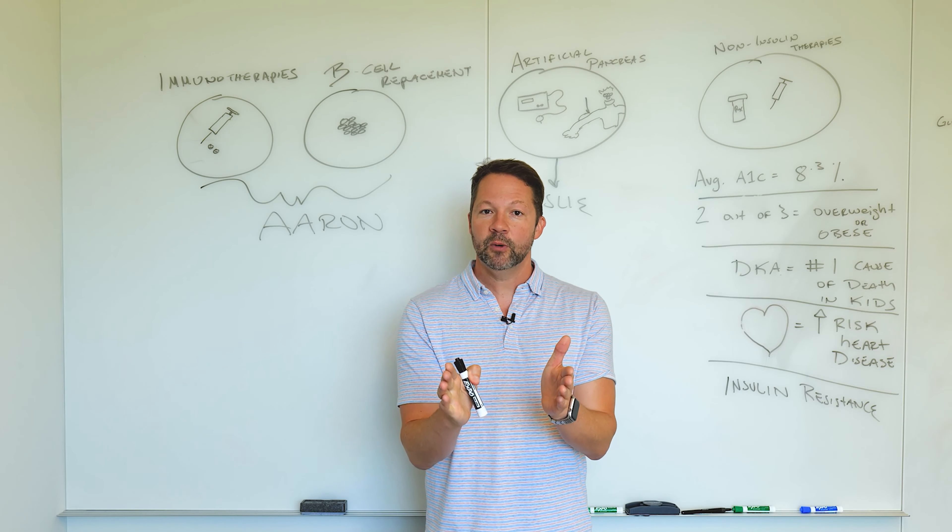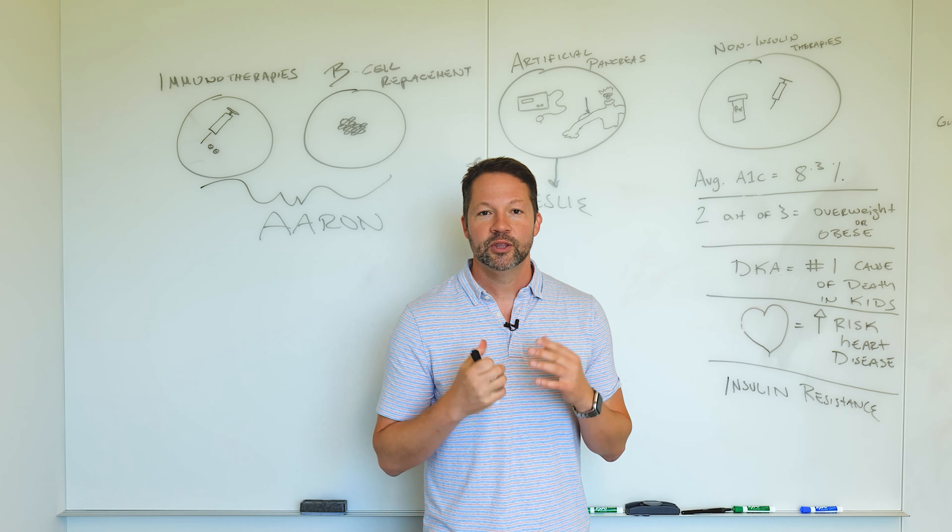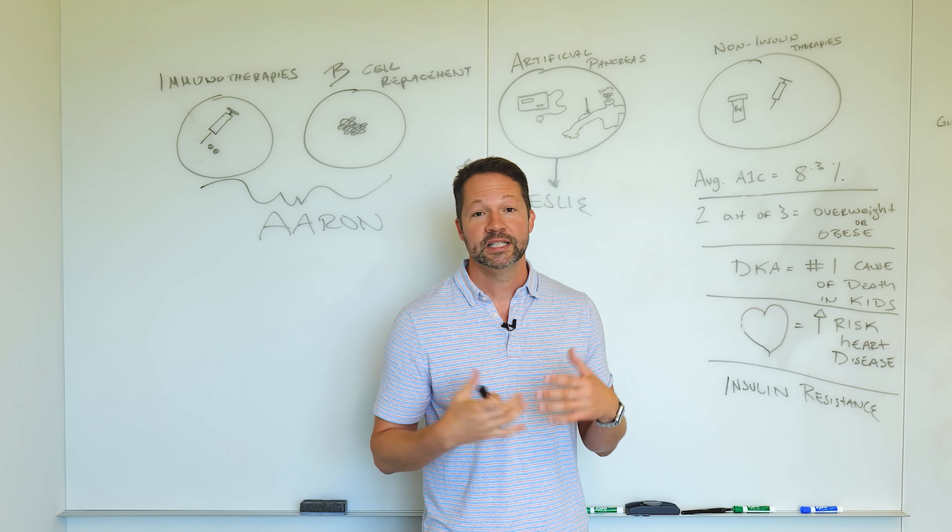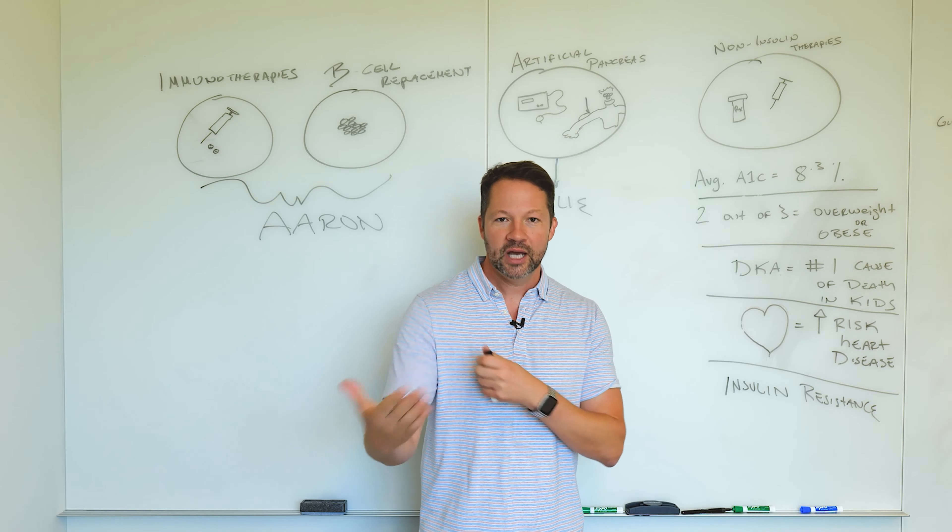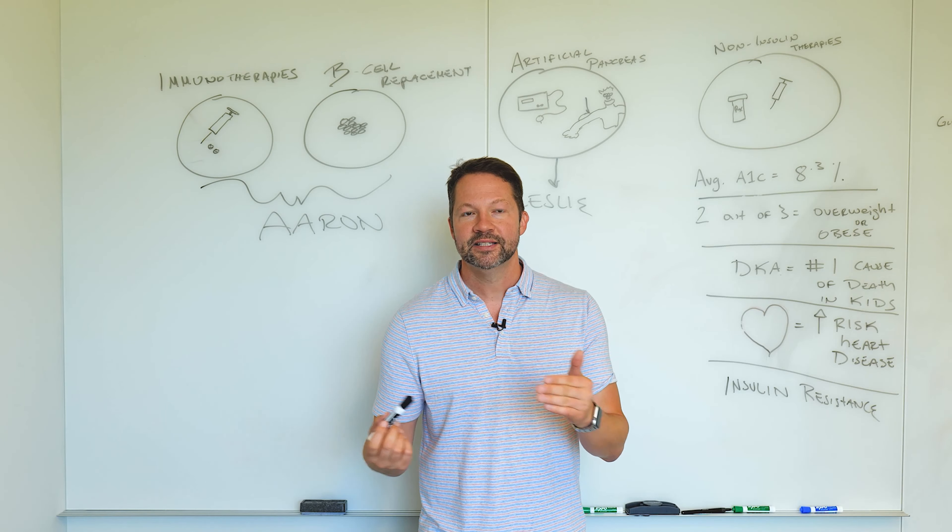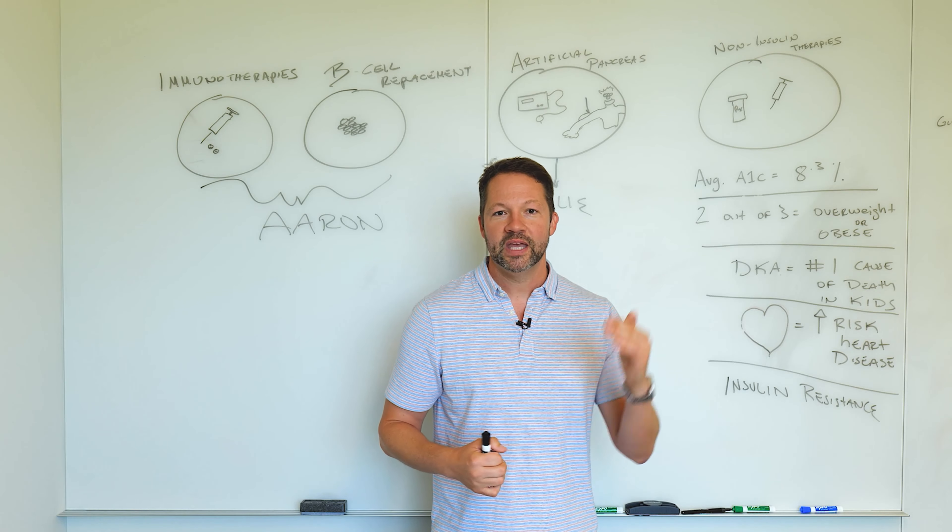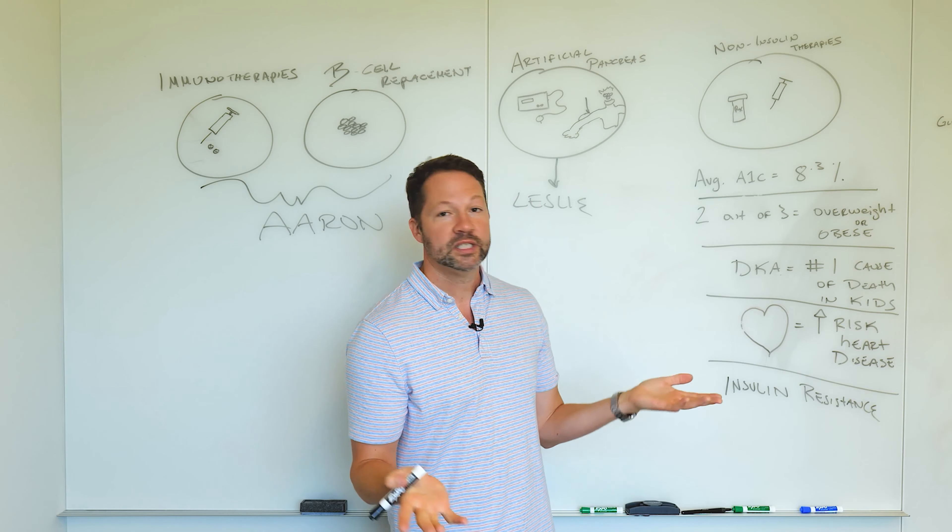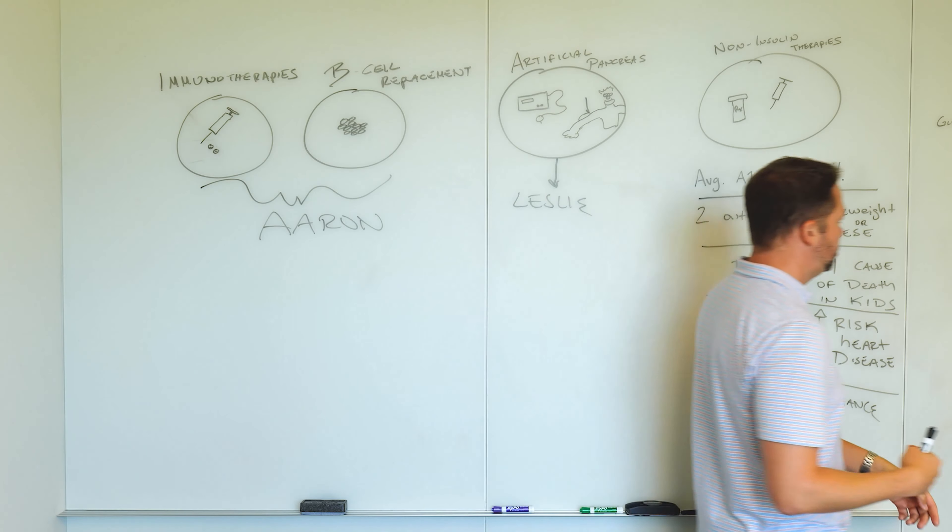So the specific example I want to give you is we've been working with a medication that blocks the hormone glucagon, blocks the action of glucagon. So you guys hopefully know what glucagon is. It's kind of the yin to insulin's yang, where insulin brings your blood sugars down, glucagon brings your blood sugars up. So what's the problem? Well, let me bring you over to this chart over here.